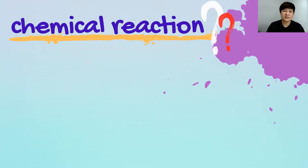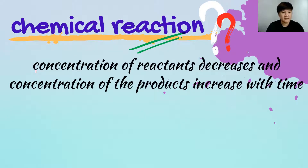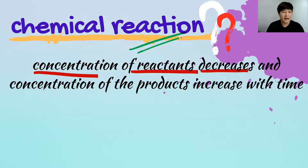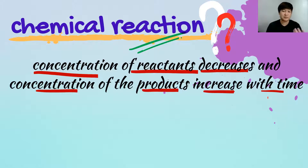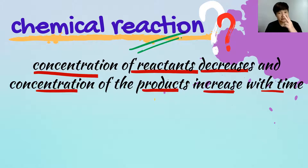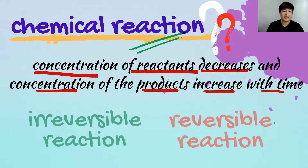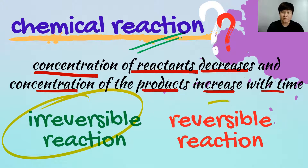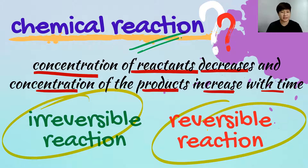What is actually a chemical reaction? A chemical reaction is when the concentration of the reactant decreases and the concentration of the product increases with time. The chemical reaction happens because your reactant is converted to become a product. We have two types of chemical reaction: irreversible reaction and reversible reaction.